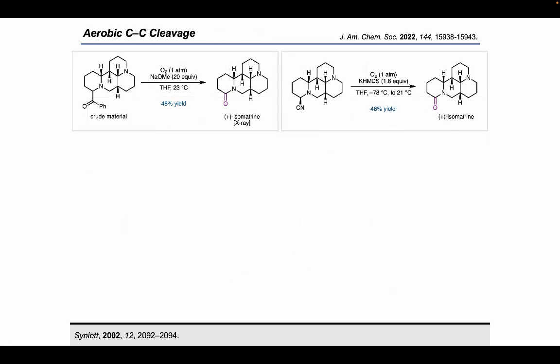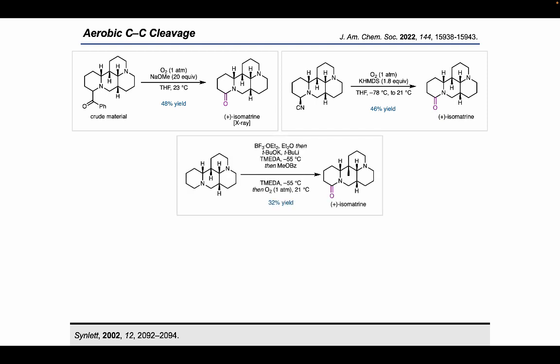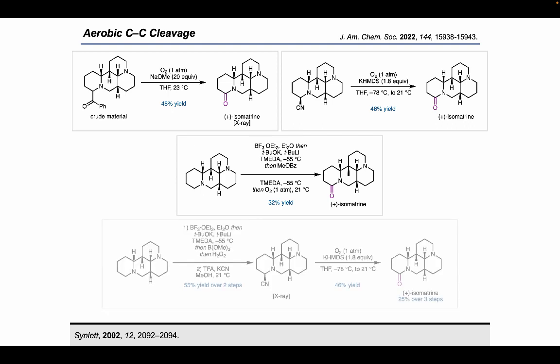We were really excited to find that we could perform a carbon-carbon aerobic bond cleavage of the crude benzoyl ketone to access isometrine in a 48% yield. We could also apply the same chemistry to the amino nitrile to access isometrine in a 46% yield. What we ended up doing was optimizing a one-pot oxidation procedure directly from the diamine to isometrine in a 32% yield on small scale. And we found that this procedure, based on the benzoyl ketone, was better than the amino nitrile because this could be done in a single step instead of over the course of three steps.